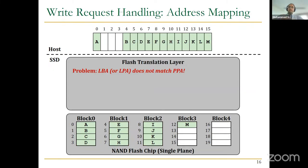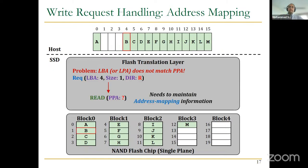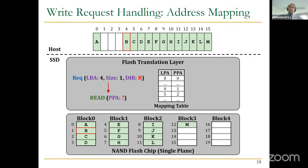Now we have the problem that logical block addresses and logical page addresses don't match. When we receive a read request for a logical block address, we need to know where we stored the data. To handle this, we maintain address mapping information in the FTL — a mapping table from logical page address to physical page address. For example, logical page address 4 is mapped to physical page address 1, so when a read request arrives we query this table and retrieve the correct physical page address.